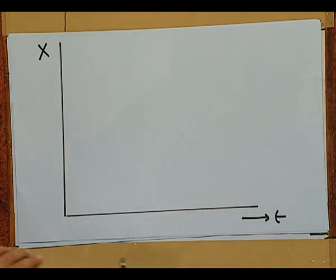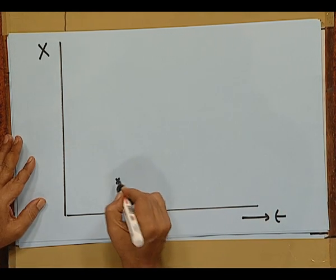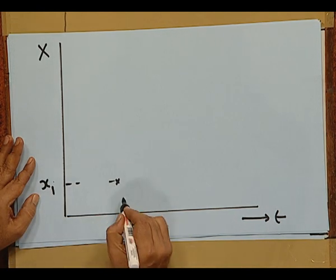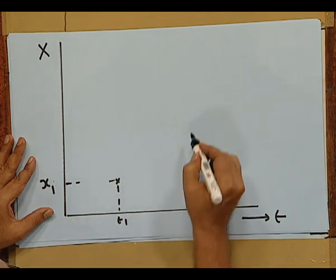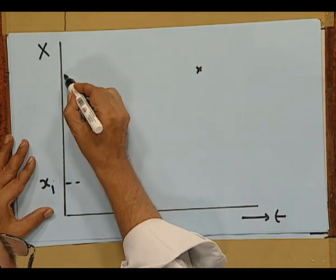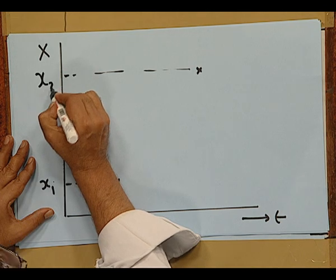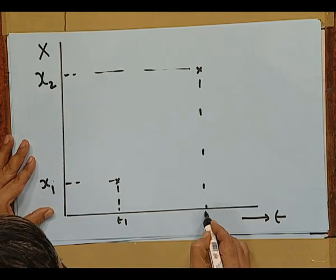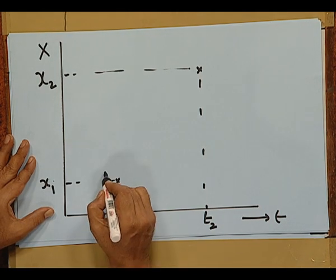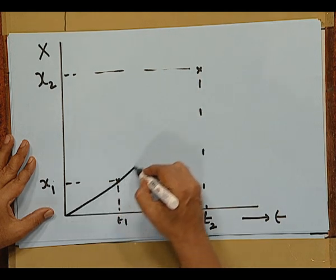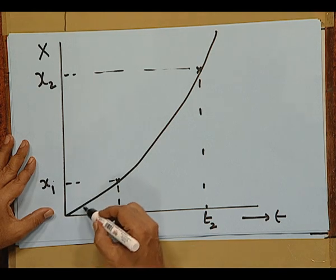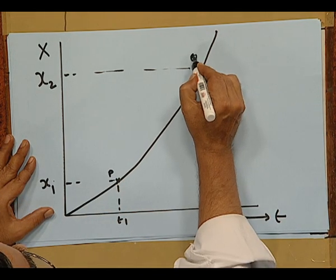Here we represent the position at point P with coordinate x1 and time T1. Point Q has its x coordinate x2 and its time coordinate T2. The object has moved from point P to point Q. When I have joined these points P and Q, I have drawn a graphical representation — not necessarily a straight line. The object is moving in a straight line, but the variation of position with respect to time may be a curve. How do we represent average velocity in graphical form?